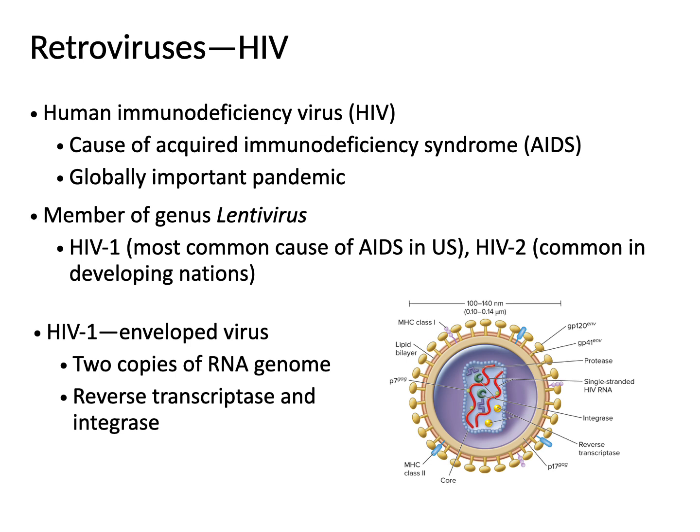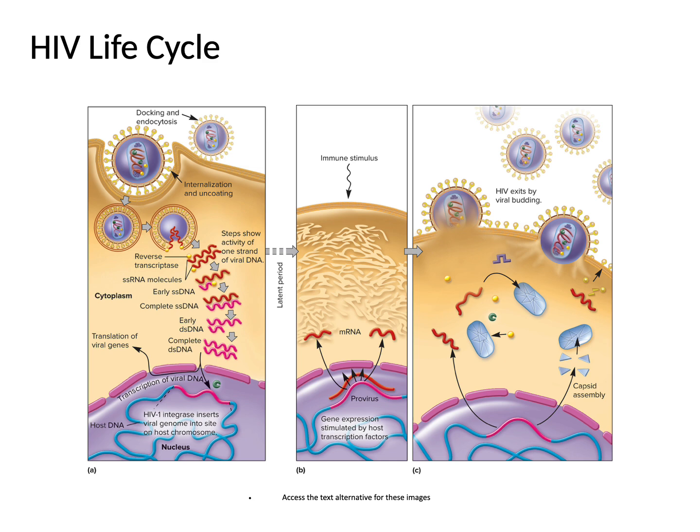HIV-1 is an enveloped virus with two copies of its RNA genome. It brings reverse transcriptase and integrase in its capsid, using those enzymes during its life cycle: reverse transcriptase makes DNA from its RNA, and integrase allows the viral DNA to integrate into the host genome. Even if the active infection is fought, the viral genome remains inserted into cells and can be turned on later.